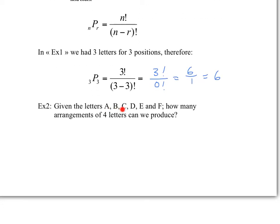Another example: given the letters A, B, C, D, E, F, how many arrangements of four letters can we produce? Obviously, we're not going to allow repetitions. What we have here is six possible letters and four possible positions, because of the four letters. Therefore, it would simply be 6 factorial divided by 6 minus 4 factorial, which would be 6 factorial divided by 2 factorial.